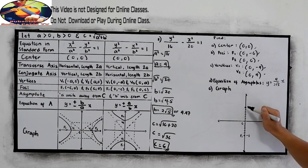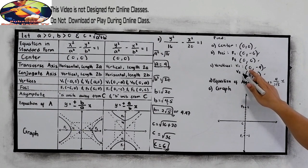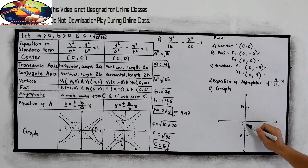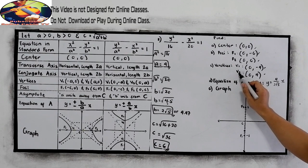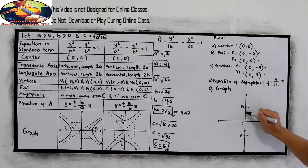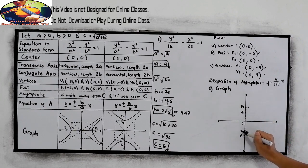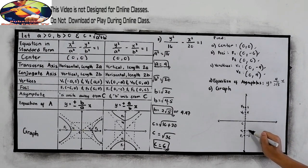Positive 6 — this will be the second focus. For the vertices: 0, negative 4 and the second vertex is 0, positive 4. So second vertex and first vertex at positive 4 and negative 4.